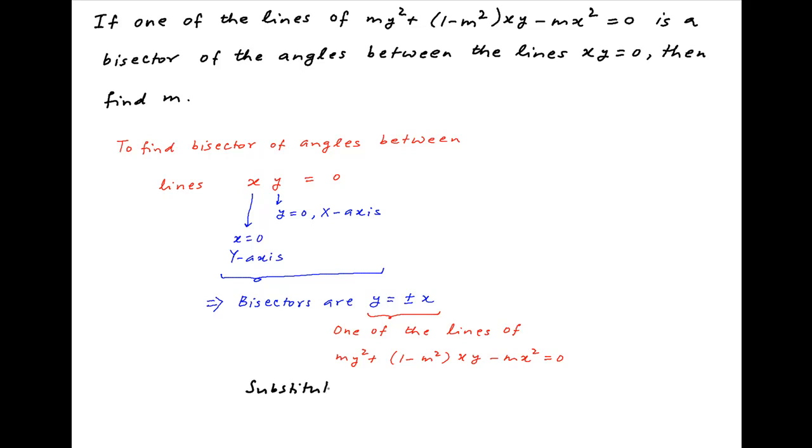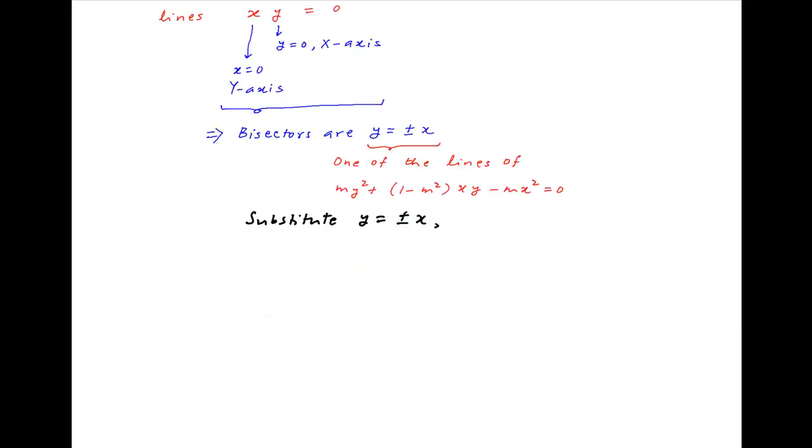Substituting y = ±x, this becomes mx² ± (1 - m²)x² - mx² = 0.